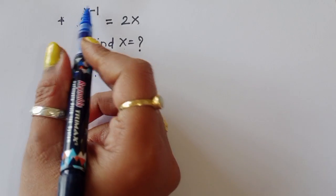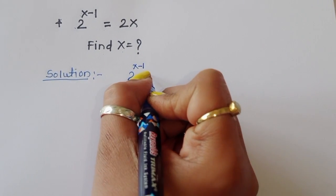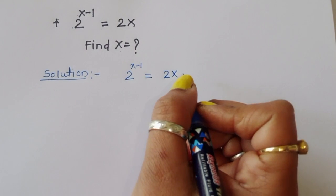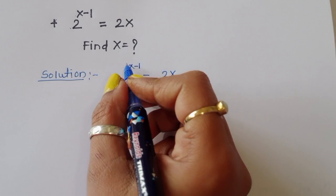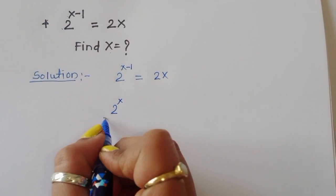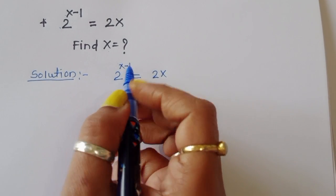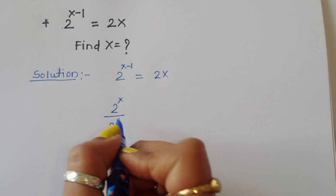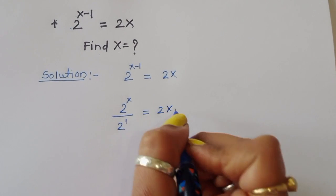2 power x minus 1 is equal to 2x. We can write this as 2 power x divided by 2 power 1 in the denominator, which is equal to 2x.